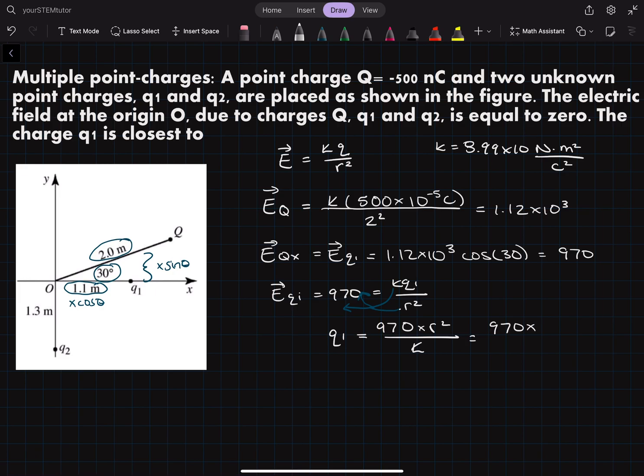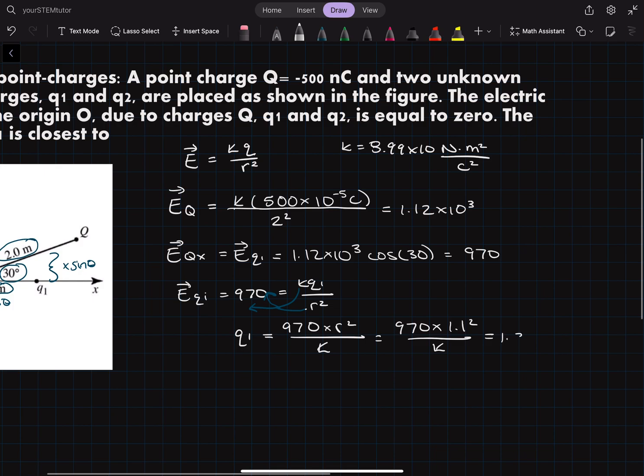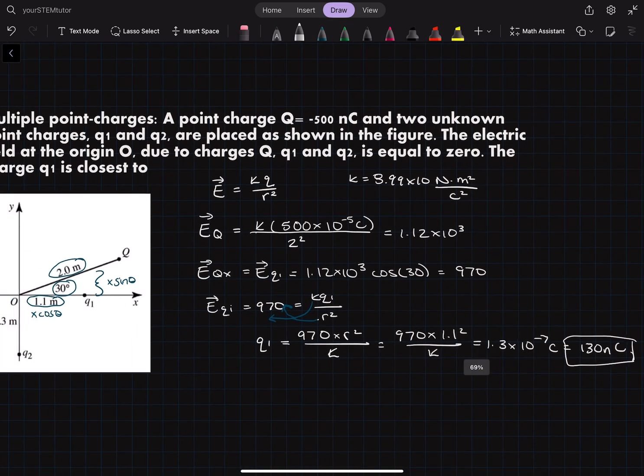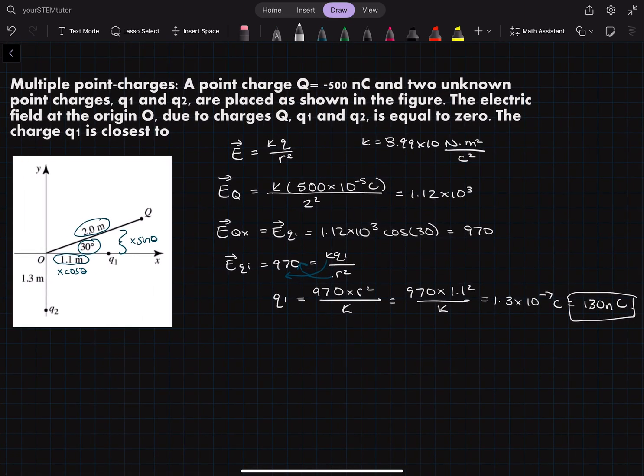So 970 times 1.1 squared divided by k is equal to 1.3 times 10 to the negative 7 coulombs which is also equal to 130 nanocoulombs. So that would be our approximate answer for q1 based off of what we have here.